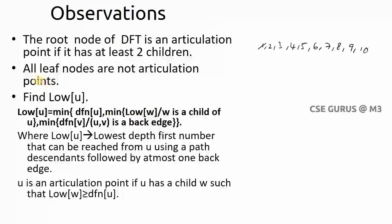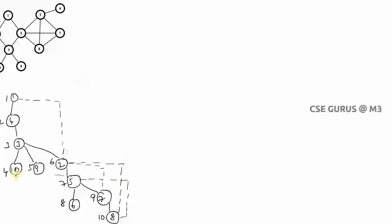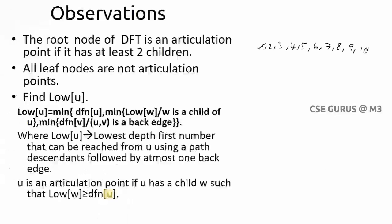The second observation is: all leaf nodes are not articulation points. The leaf nodes in our tree are 10, 9, 6, and 8 — none of these are articulation points. Among the remaining vertices — 2, 3, 4, 5, and 7 — we need to determine which are articulation points using the procedure, which consists of 2 steps.